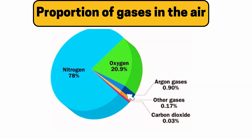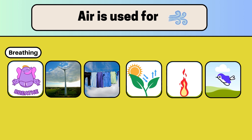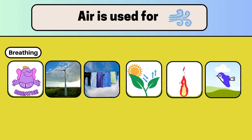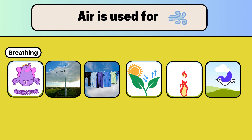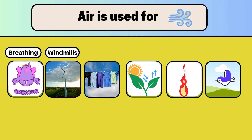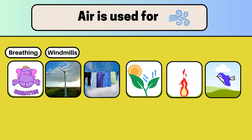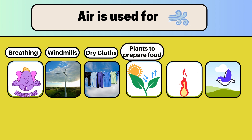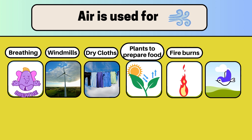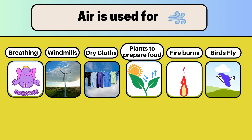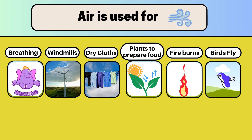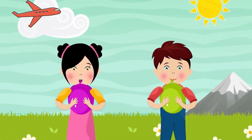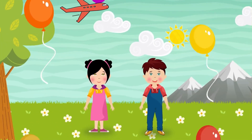Friends, all living things need oxygen present in air to breathe. Air helps to run windmills to produce electricity. Also, it is used for drying clothes. Plants need air to prepare their food. Also, air is needed for burning fire. Air helps birds fly. It fills up balloons and helps planes stay up. Air helps us in many ways — isn't that amazing?